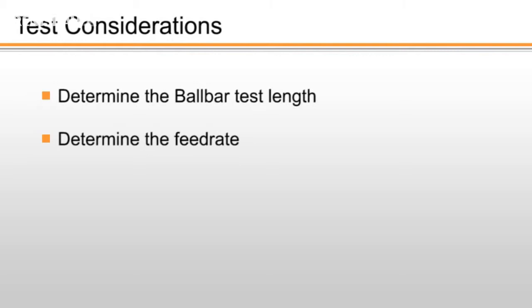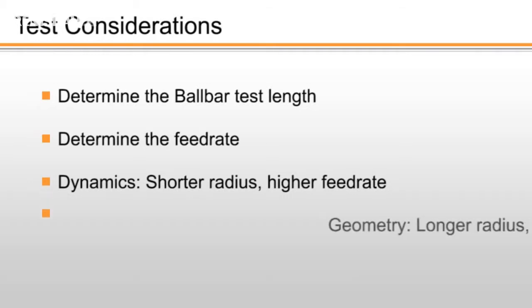Determine the feed rate, normally a value close to that used in your machining operations. It is important to note that ball bar length and feed rate will have an effect on test results. In general, you should use shorter length and faster feed rates if your primary interest is in machine dynamics such as servo mismatch, reversal spikes, and vibration. You should use longer lengths and slower feed rates if your primary interest is in machine geometry such as straightness and squareness.